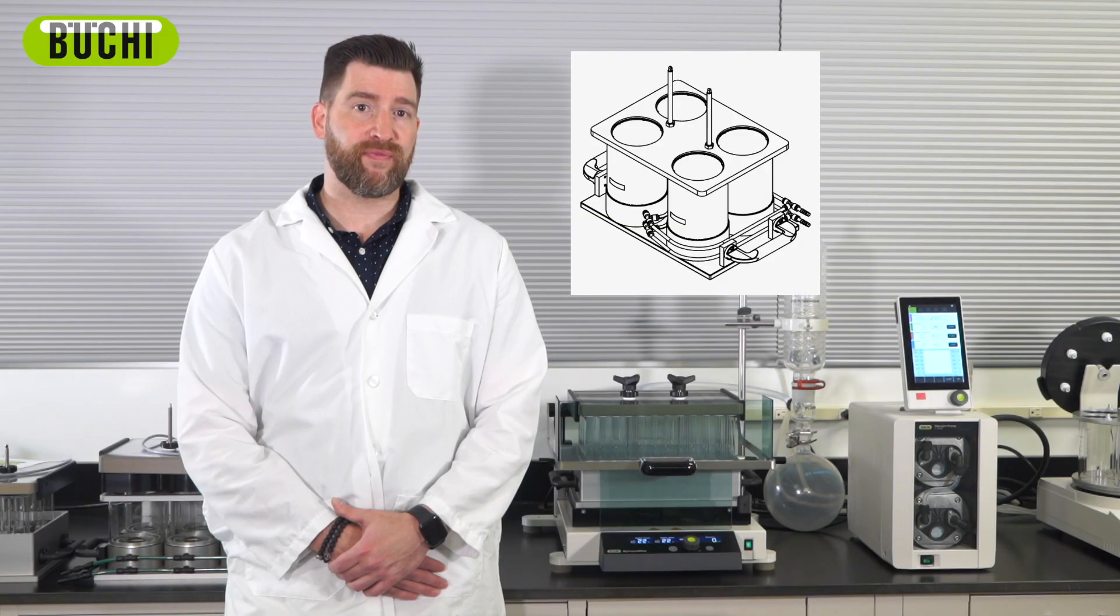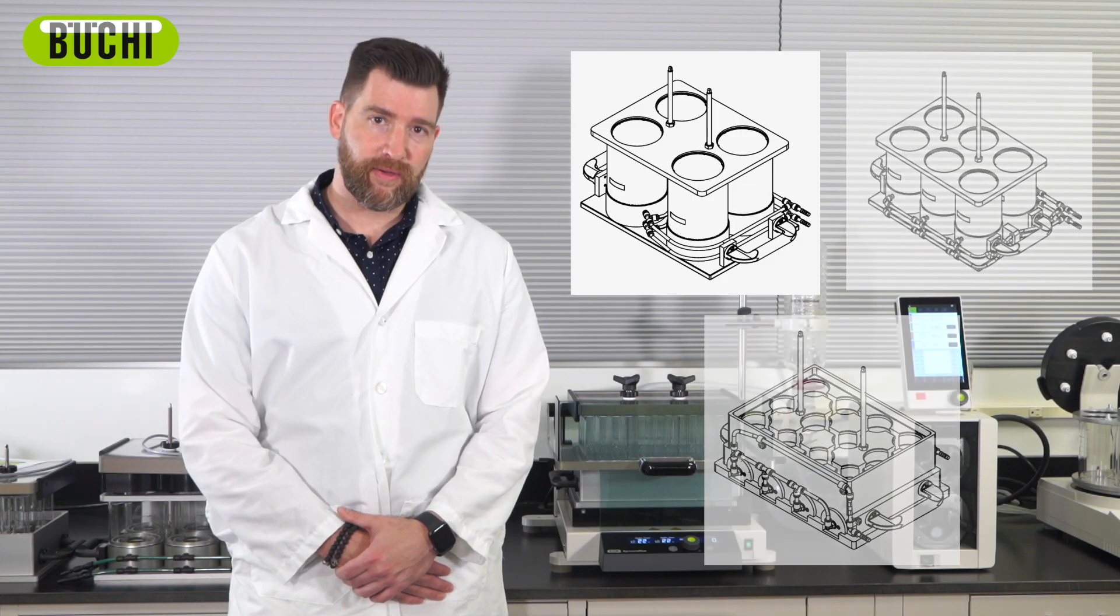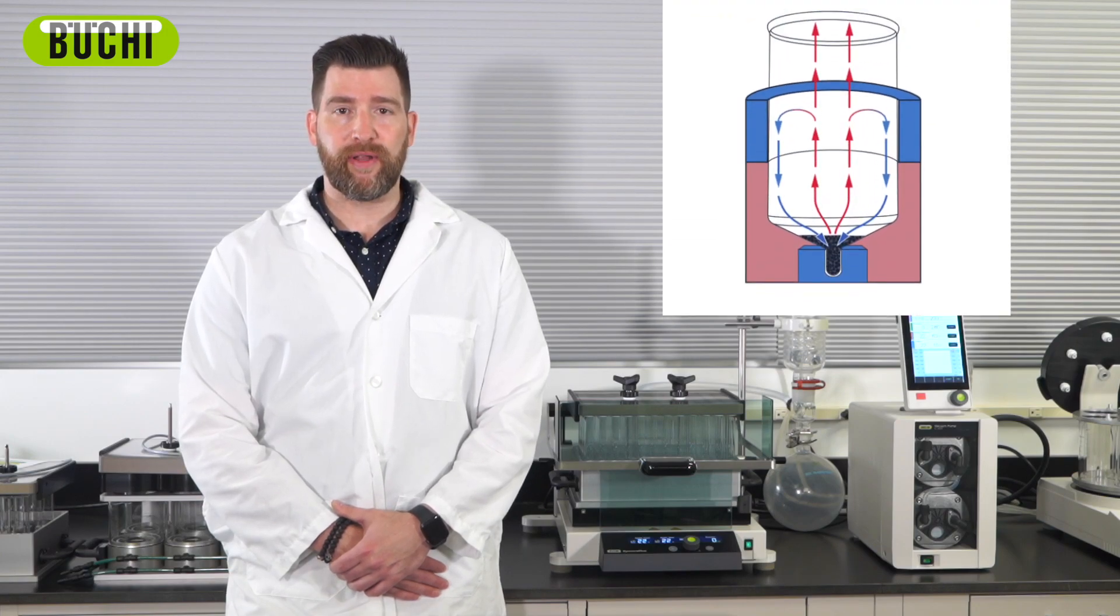This unit comes in 4, 6, and 12 positions, for volumes ranging up to 500 milliliters per container. You'll notice a unique Analyst accessory called the Flushback Module. This improves analyte recovery by reflexing condensed solvent against the walls of the glassware.